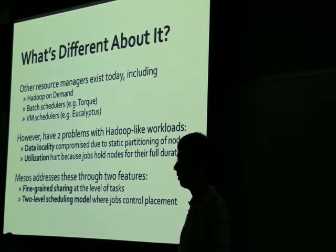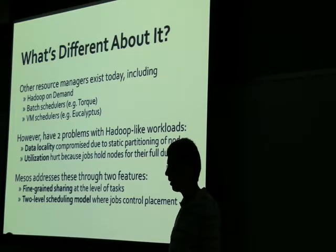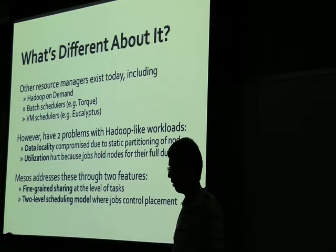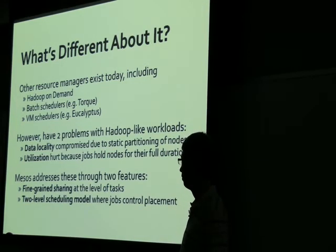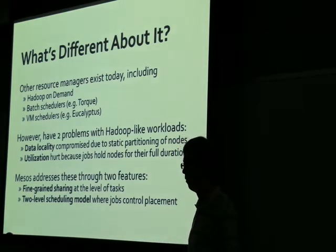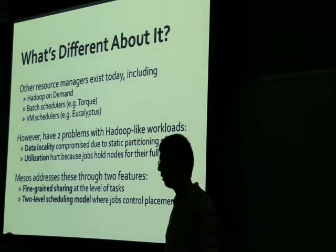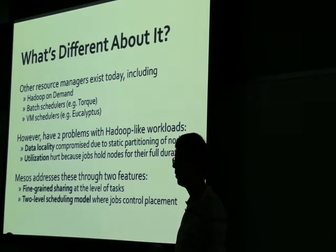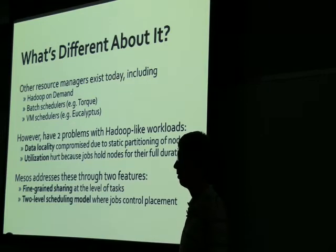Mesos addresses these two issues through fine-grained sharing: rather than giving a static coarse-grained partition of the cluster at the beginning, we do sharing at the level of tasks — the same way Hadoop does within jobs. Your job can scale up and down based on how many tasks it's running, and different jobs can run tasks on the same machine to access data locally. We also have a two-level scheduling model where jobs participate in choosing which nodes they run on, ensuring each job can run where it actually wants to be — where it has data or enough memory.